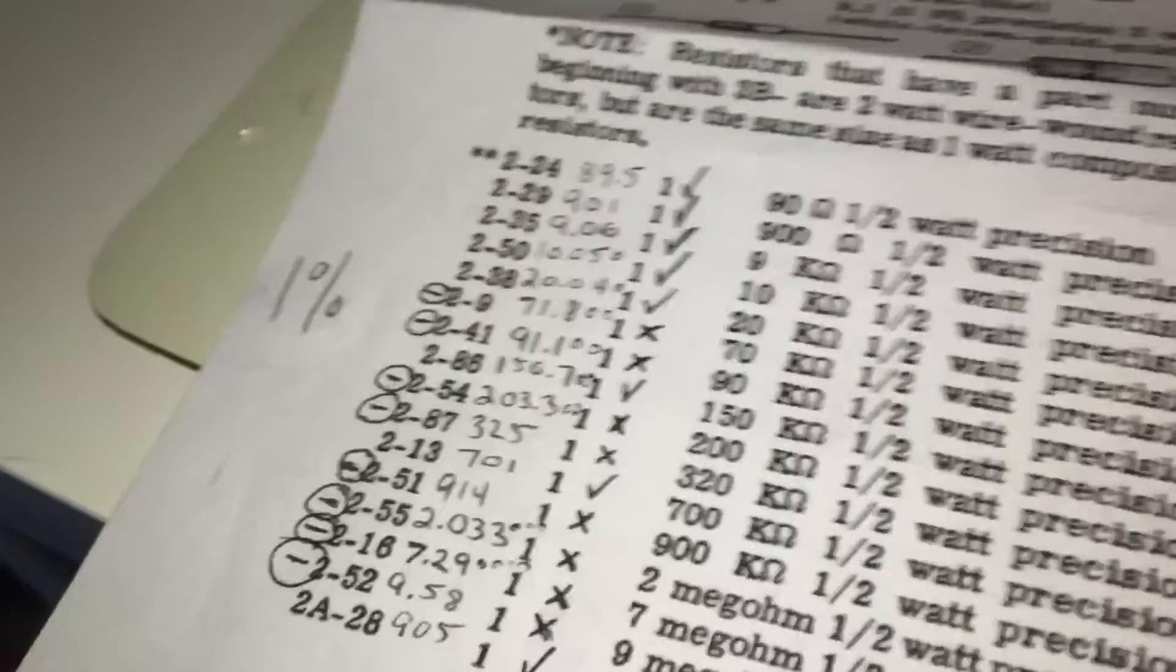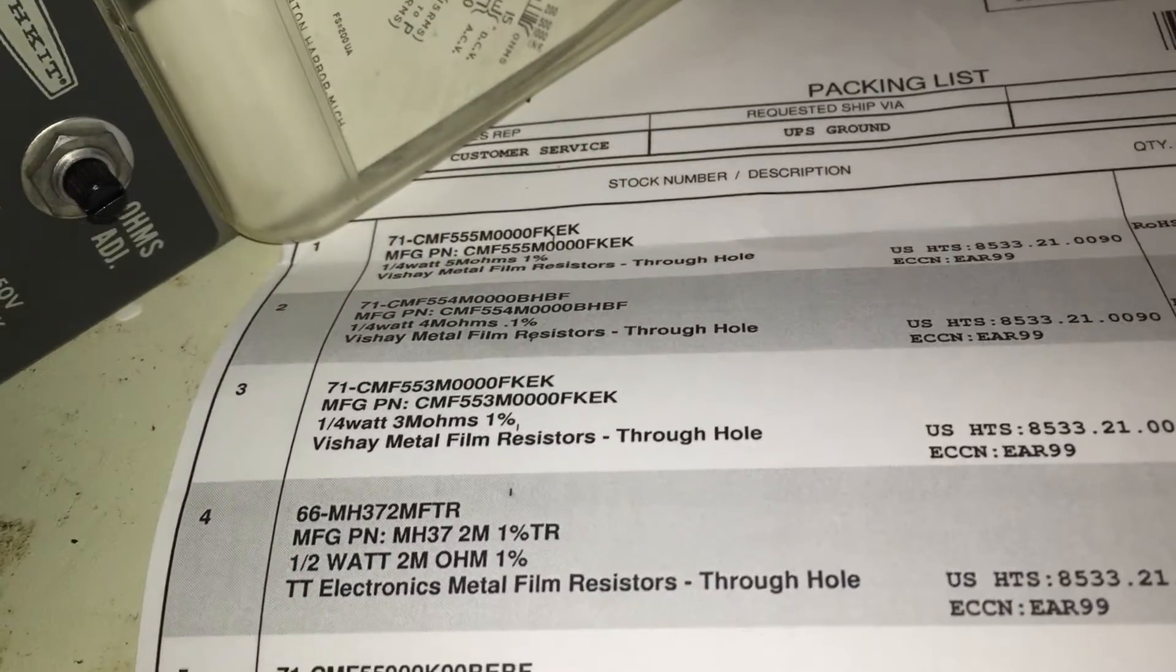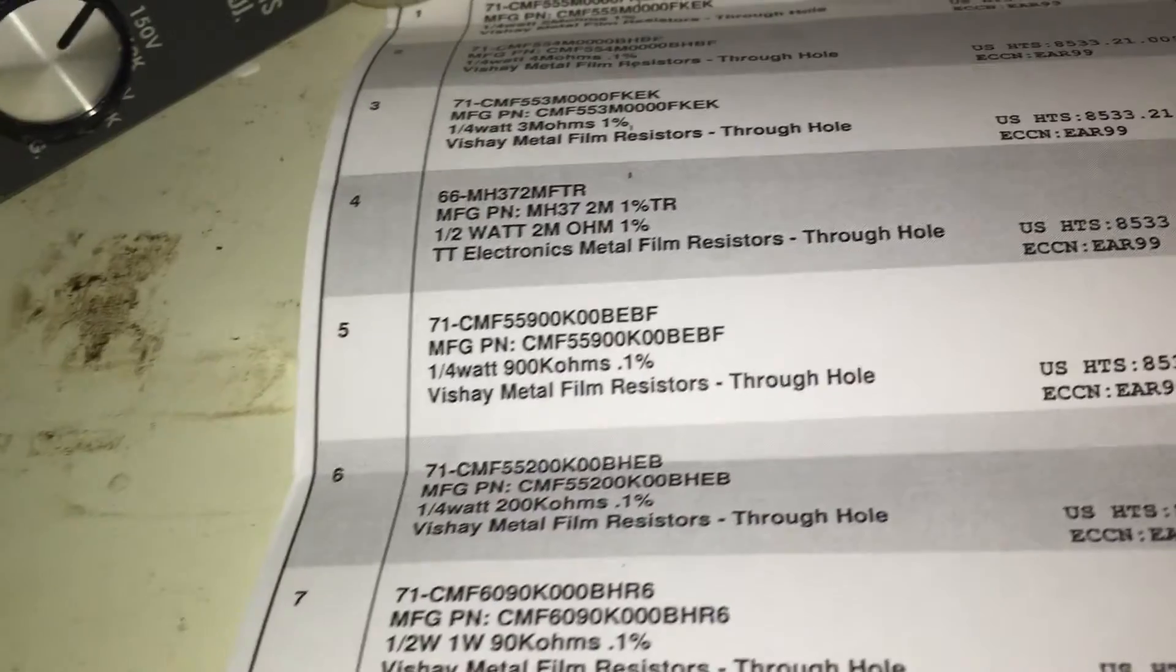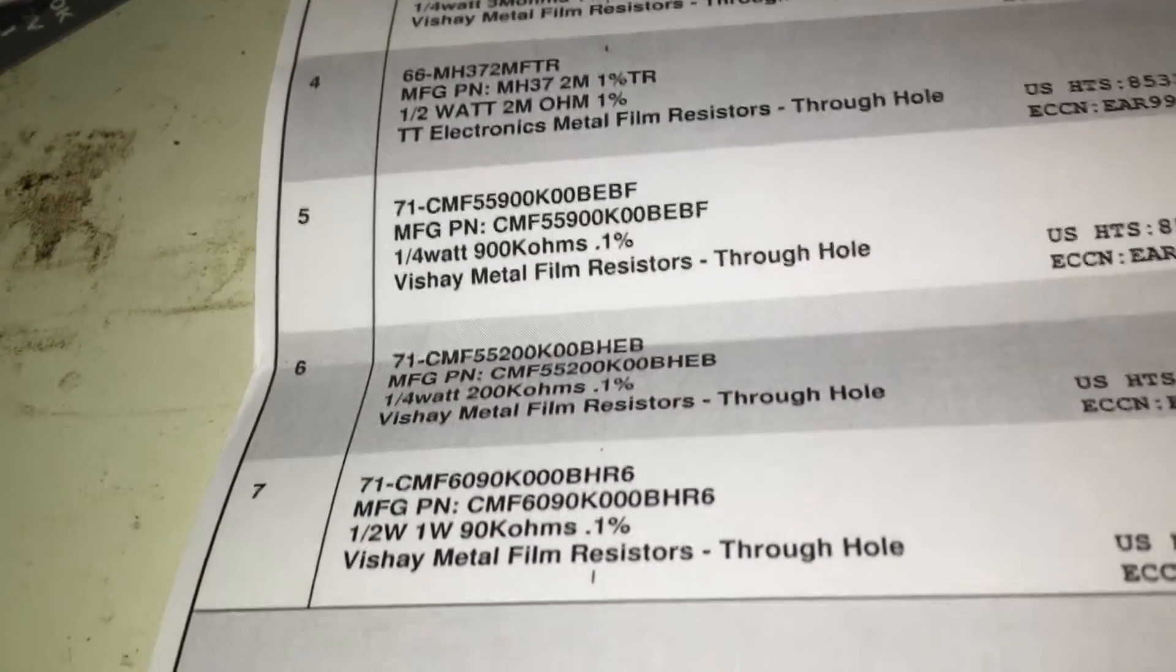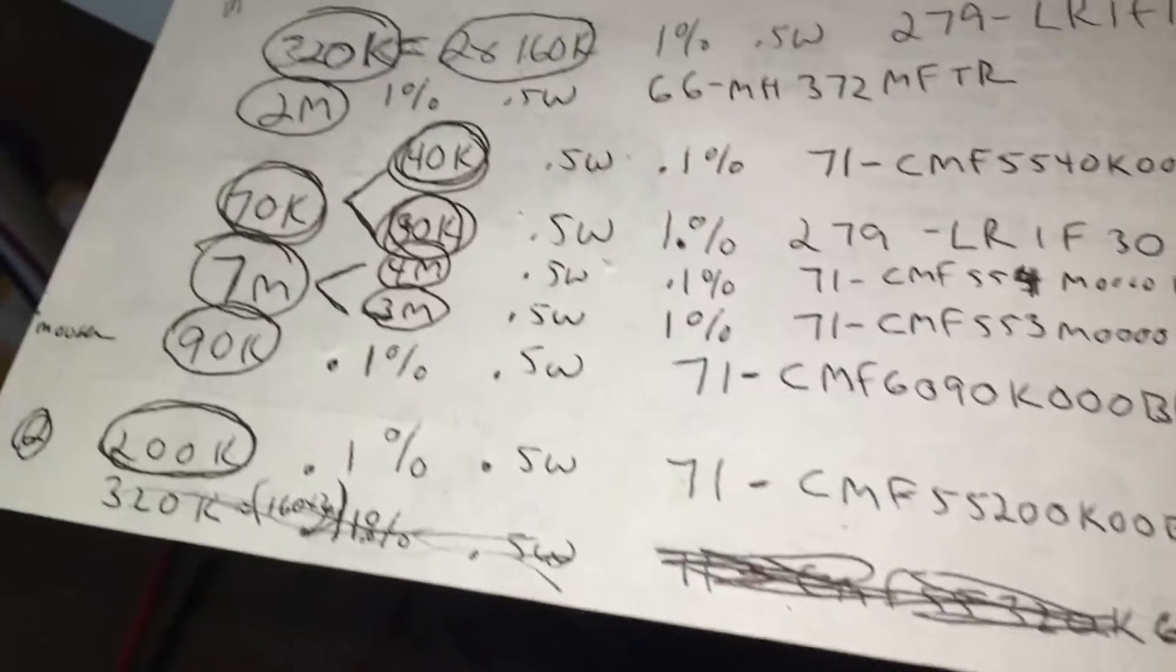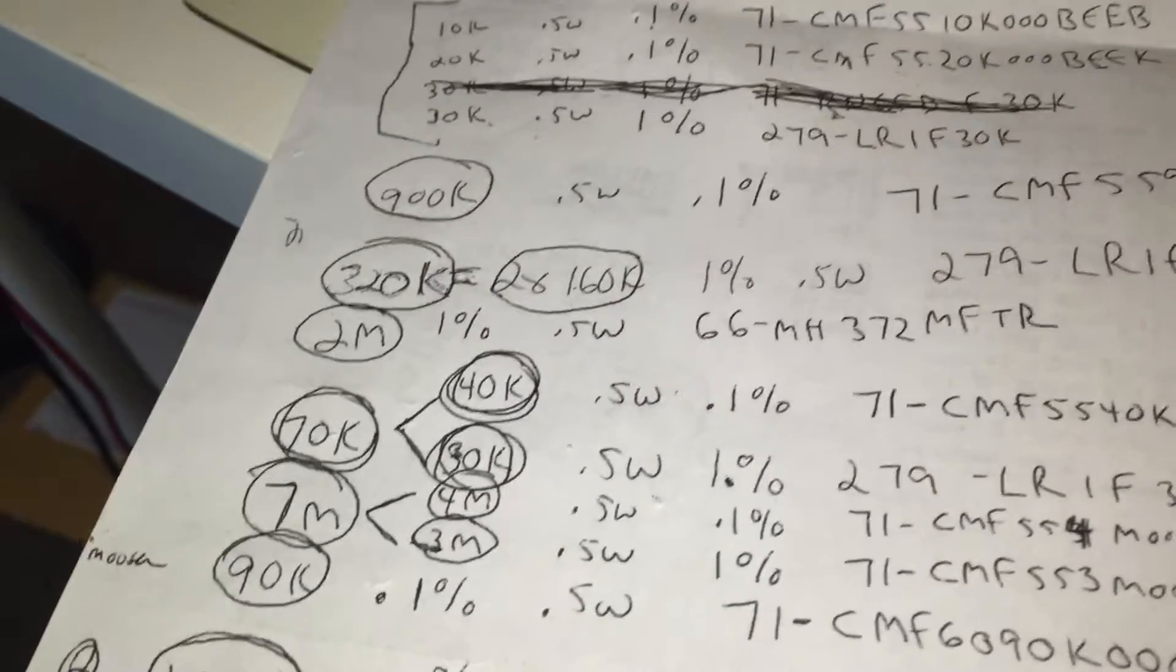And I was really specific about it and went along, eventually found from Mouser. I ordered these. Some are 1%. A lot of them are 0.1%. And some of them are combinations thereof in order to attain those values. And I had ordered them. And on the back of this sheet, you could see that I had put together a couple of combinations to attain values.